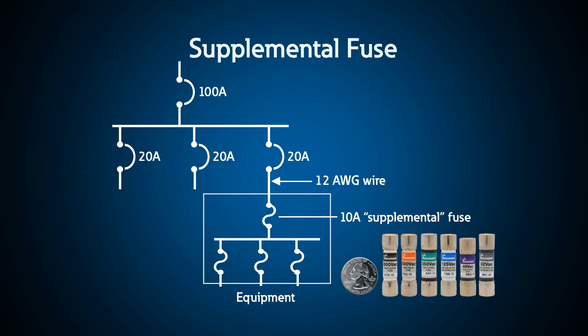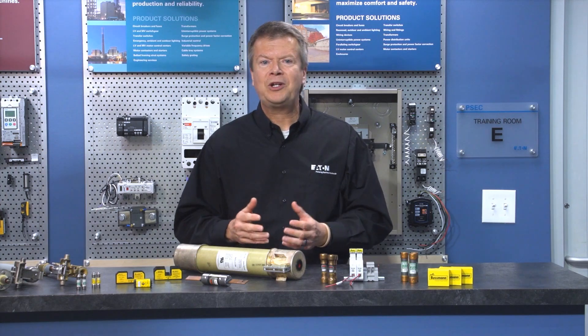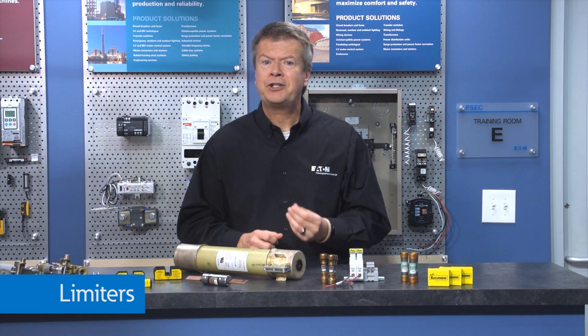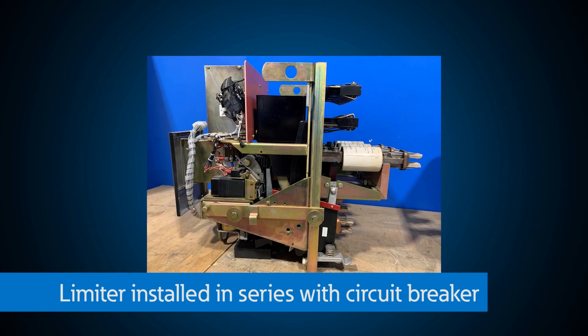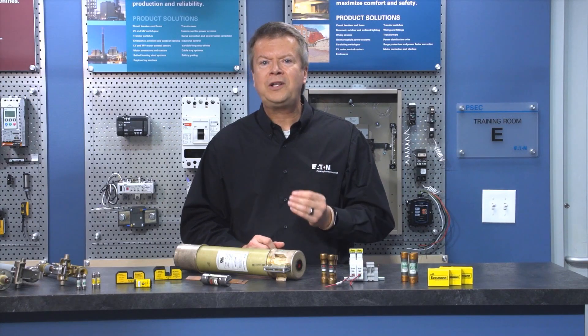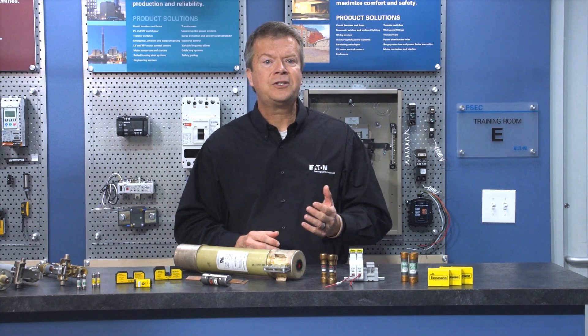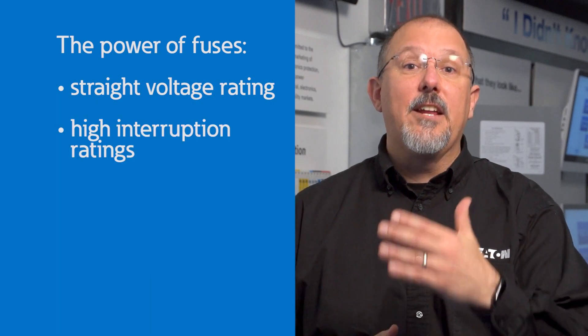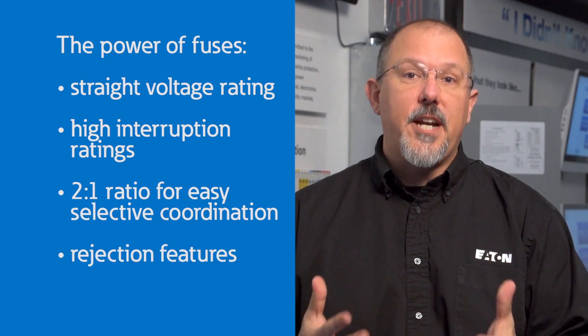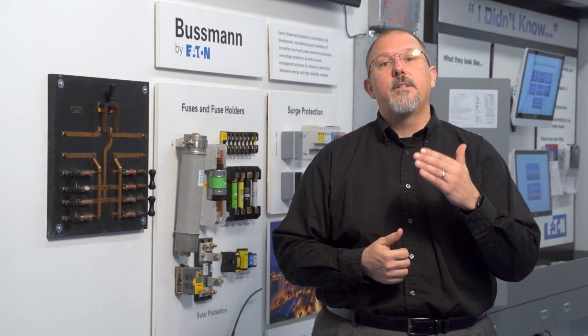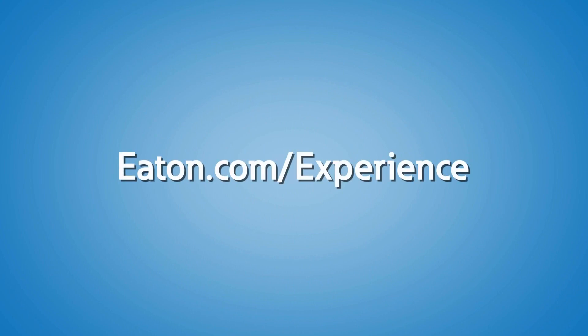Special application fuses include: high-speed fuses for semiconductor applications in VFDs and similar power electronics, sized based on I²t let-through energy; supplemental fuses placed inside equipment as backup for the main protective device; and limiters, connected in series with other OCPDs in low-voltage systems, which only clear very high current faults — effectively increasing the SCCR of that OCPD. The power of the fuse is in its simplicity: straight voltage ratings, high interrupting ratings, 2-to-1 ratio for selective coordination, rejection features, and current limitation.